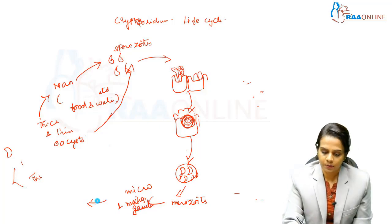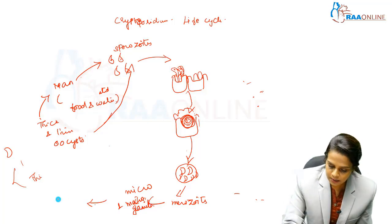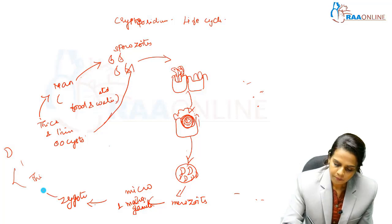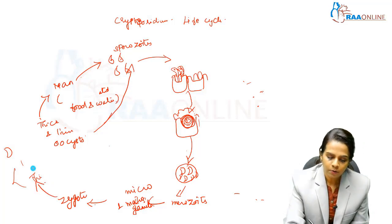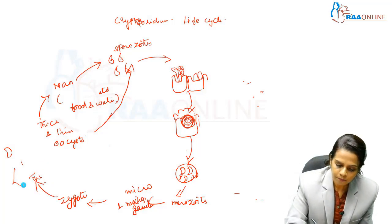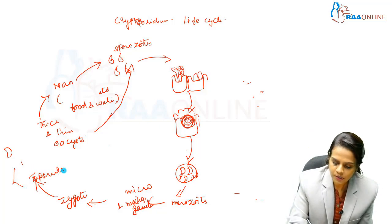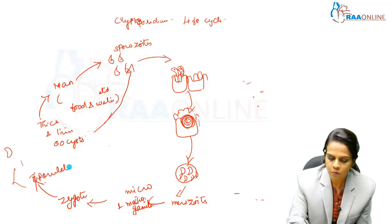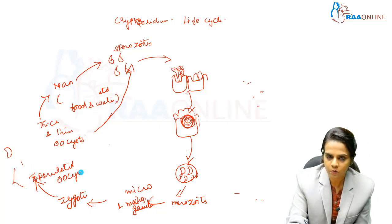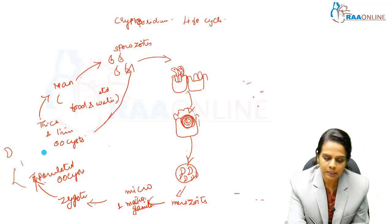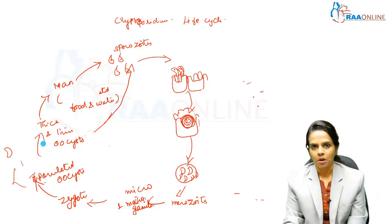Fertilization takes place resulting in zygote formation. The zygote undergoes sporogony to form sporulated oocysts — first unsporulated oocysts form, then sporulated oocysts, which are the thick and thin walled oocysts.